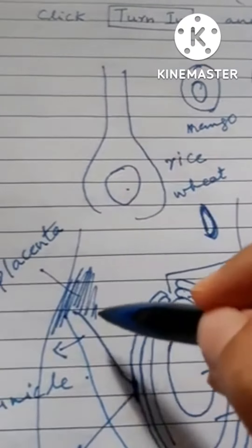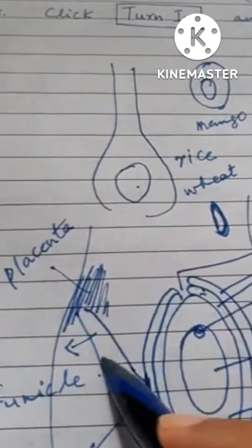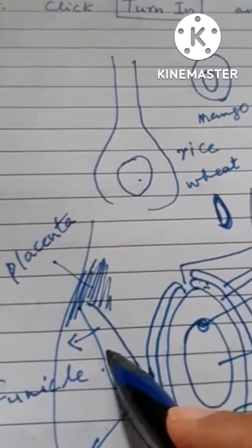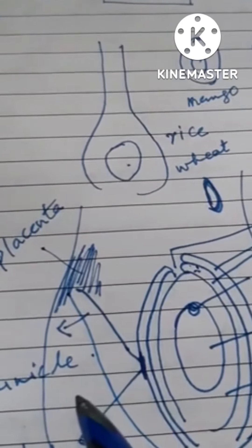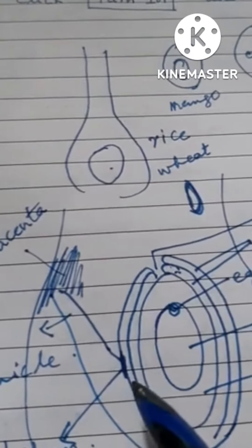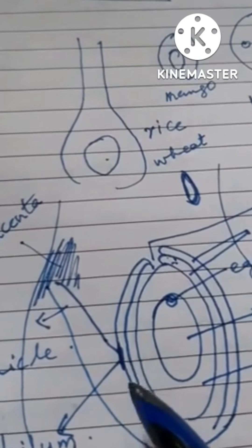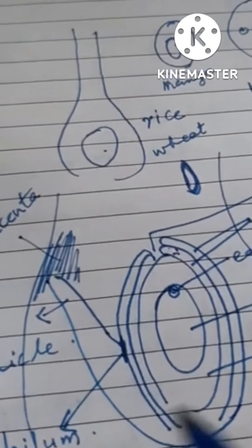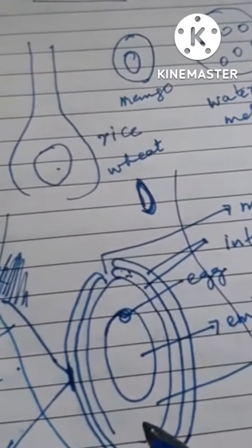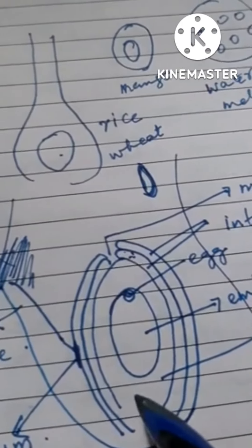The ovule is attached to the tissue of the ovary by means of a stalk called the funicle. The point of attachment of the funicle with the ovule is called the hilum.